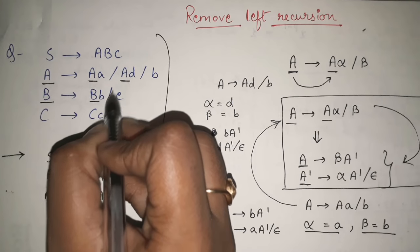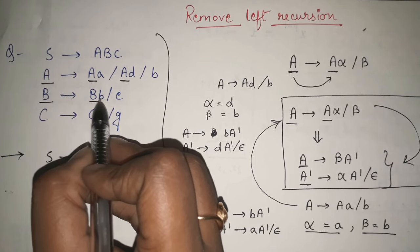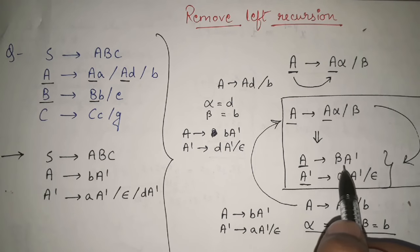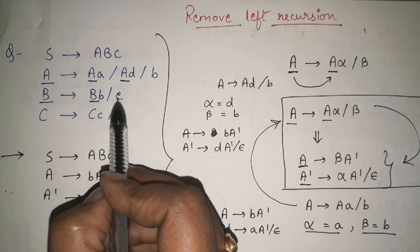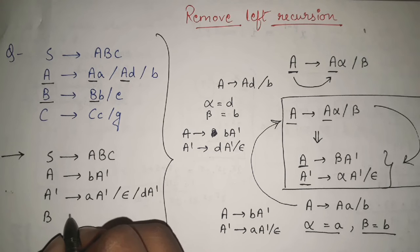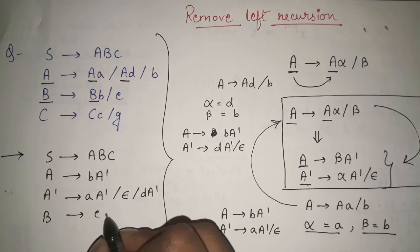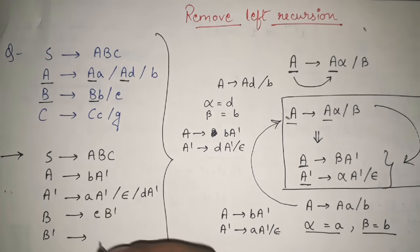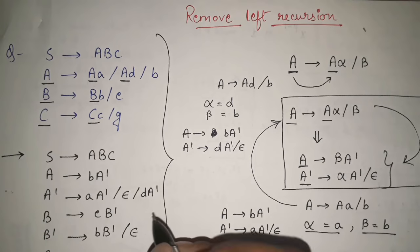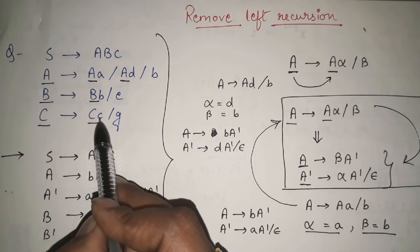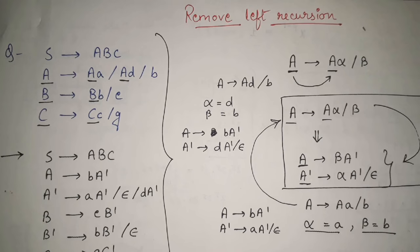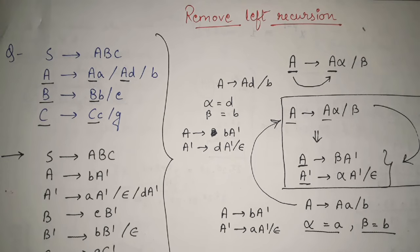Now, B gives B B or E. B gives B B means B is calling itself, so again I am having left recursion. Applying the same formula: alpha equals small b, beta equals E. I will get B gives E B dash, and B dash gives small b B dash or null. Similarly, C is again calling C — this is also left recursion. Applying the same formula: alpha is small c, beta is G. I will get C gives G C dash, and C dash gives small c C dash or null.